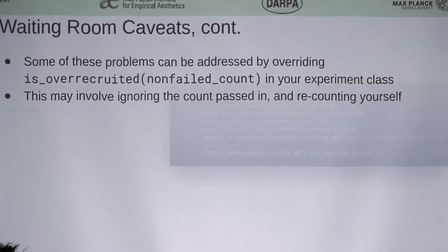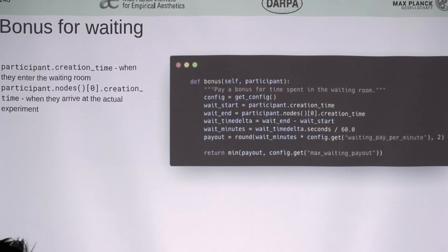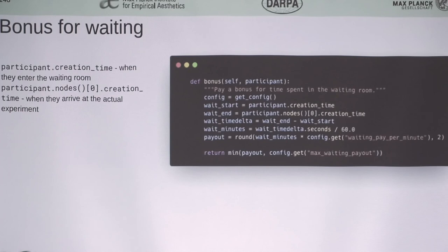This is a quick implementation of how you can pay people for waiting — something some experimenters have elected to do. You do that in your bonus method, comparing the creation time of the participant (effectively when they land in the waiting room, since the waiting room is responsible for creating participants) against the creation time of their node, which is created when they land in the experiment page. Otherwise it's the same as the example for paying for total participation time.